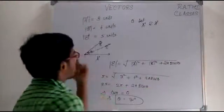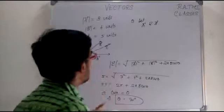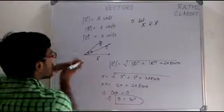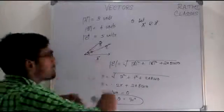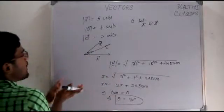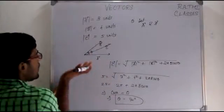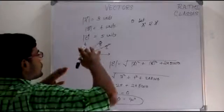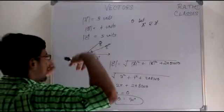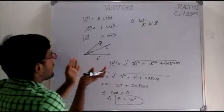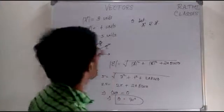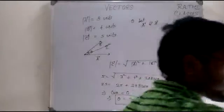This resultant vector C means that it will produce the same effect as produced by the vectors A and B when applied together.